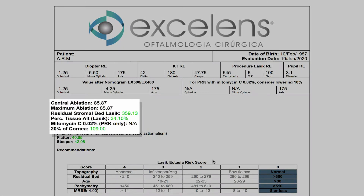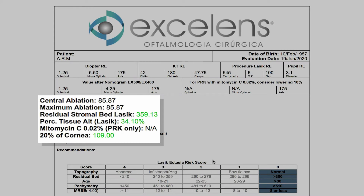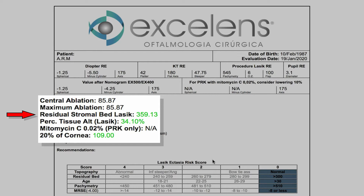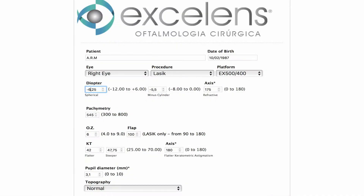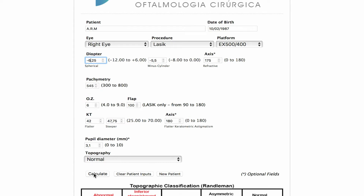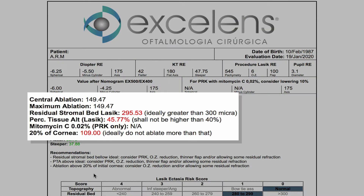Consecutively, the calculations related to tissue consumption are presented. Central ablation is shown first — it will be used for PTA calculation. After that, the result for maximum ablation is presented, as it will be used to determine the recommended mitomycin use time interval. Subsequently, the calculation of the residual stromal bed is displayed. In this example, the results are within the recommended range, but whenever any out-of-bounds result is found, they will appear in red, with the suggested limits in parentheses.